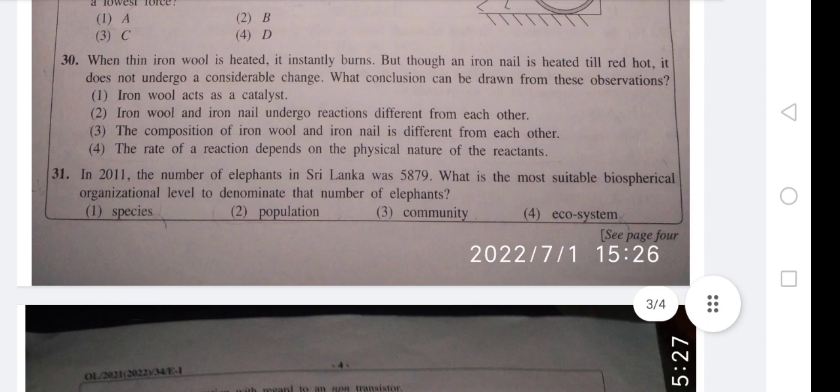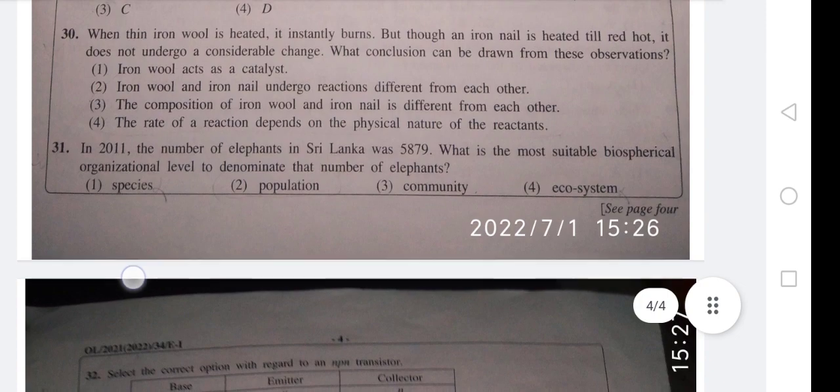Question 30: When thin iron wool is heated, it instantly burns, but an iron nail is heated till hot, it does not undergo a considerable change. What conclusion can be drawn from this observation? Now iron wool heated up and burns itself, but a solid iron nail, even though we heat it till red, it won't burn.